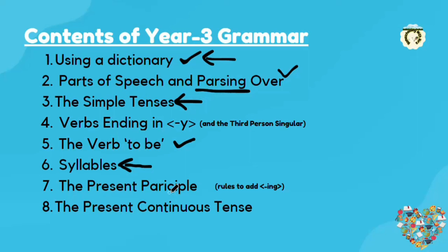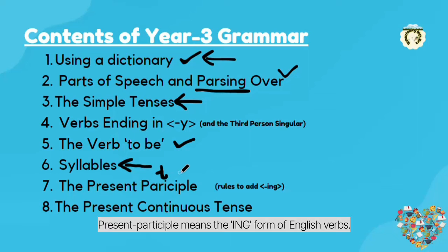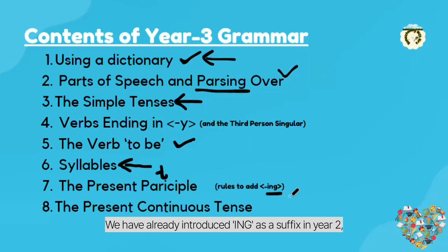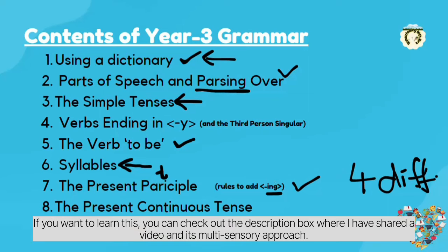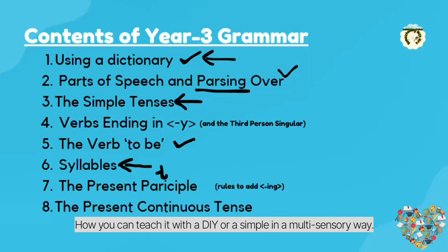Then we have the present participle — the ING form of English verbs. We have already introduced ING as a suffix in year 2, but here we will teach them the rules to add ING. There are four different rules to add the ING suffix to any base word. You can check out the description box where I have shared a video along with a multi-sensory approach on how you can teach it with a DIY or in a multi-sensory way.